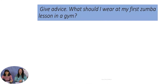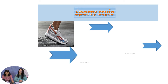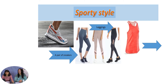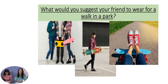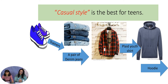I also need a piece of advice: what to wear on my first Zumba lesson in a gym? Sporty style is the best one — choose a pair of comfortable sneakers, leggings with print, and a tank top. What would you suggest your friend to wear for a walk in a park? Maybe you thought about casual style: trainers, a pair of denim jeans, a plaid youth shirt or a hoodie.